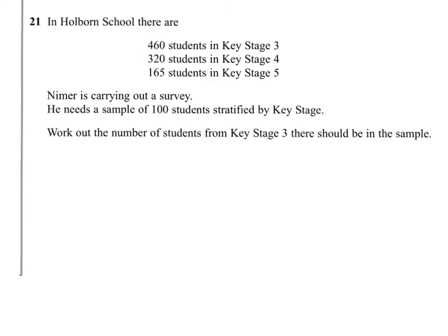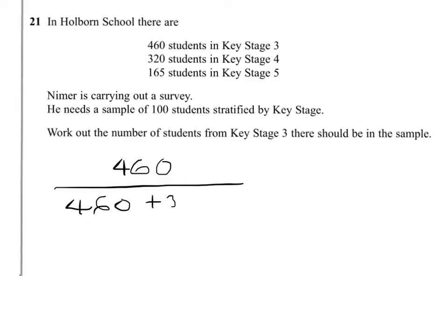To work out the number of students from Key Stage 3 that should be in the sample, we need to work out the fraction of students that come from Key Stage 3 out of the school as a whole. So that's 460 students in Key Stage 3 out of a total of 460 plus 320 plus 165.